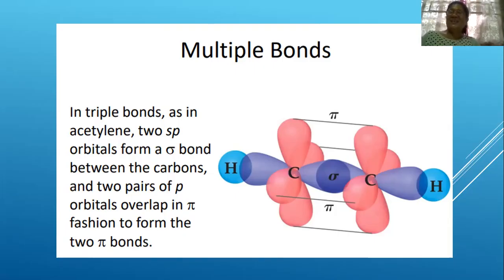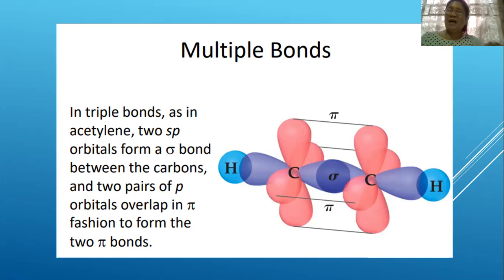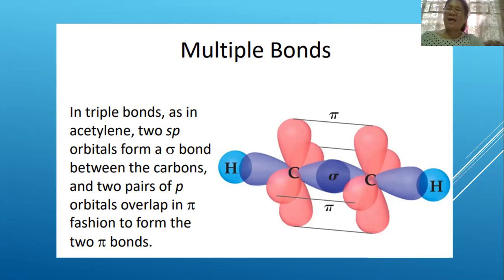That concludes our lecture on chemical bonding. In this last part, we learned how to draw Lewis structures, the different molecular geometrical shapes, the VSEPR (Valence Shell Electron Pair Repulsion) theory, and the composition of multiple bonds — sigma and pi bonds. Please submit the Lewis structure exercises by Monday through the LMS. Thank you and have a pleasant day.